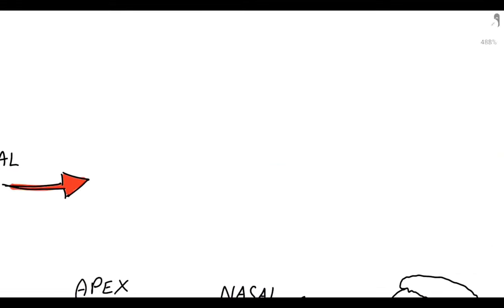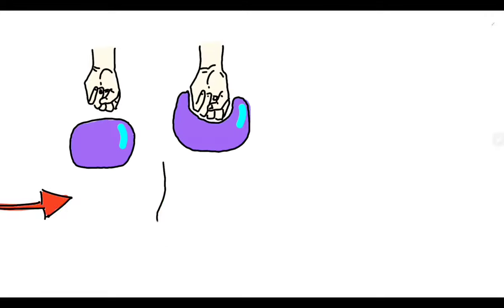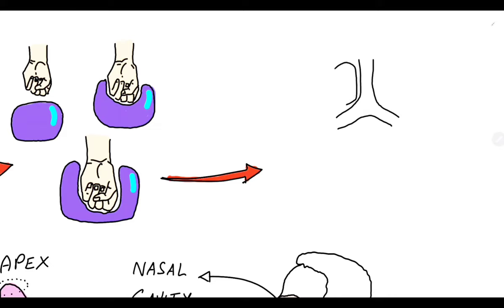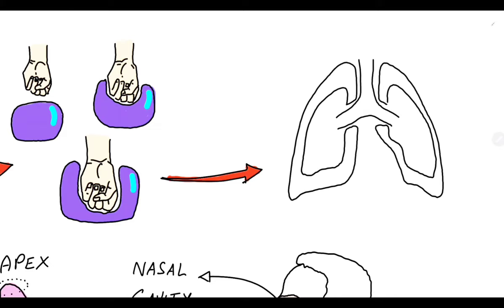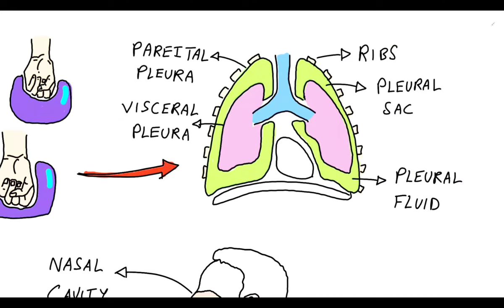Now let us understand the pleura with an example. Let us assume that the fist is the lung and the water-filled balloon is the pleura. If we press the balloon with the fist, two distinct outer and inner layers will be formed which will completely cover our fist. The outer pleural membrane is known as parietal pleura, which covers the internal surface of the ribcage. The inner pleural membrane is the visceral pleura, which is attached to the costal surface of the lungs. The potential space between the pleural membranes is the pleural sac, which contains the pleural fluid.